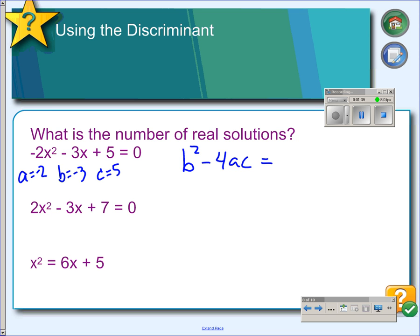we have negative 3 squared minus 4 times negative 2 times 5. So, negative 3 squared is 9, 4 times 2 is 8, 8 times 5 is 32, and two negatives will make that plus. 9 plus 32 is 41. Since this is a positive number, that tells us there will be two real solutions.